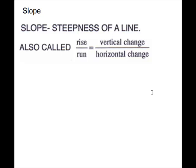In this video, we're going to look at slope of a line. Slope is a measure of the slant of a line, or the steepness of a line. It is also called the rise over the run, or the vertical change over the horizontal change. It's a ratio of how much the line goes up and down compared to how much it goes across.